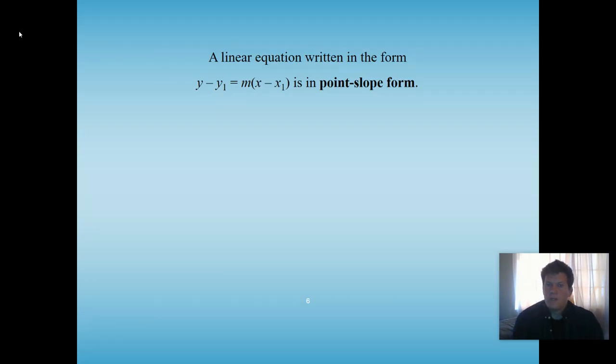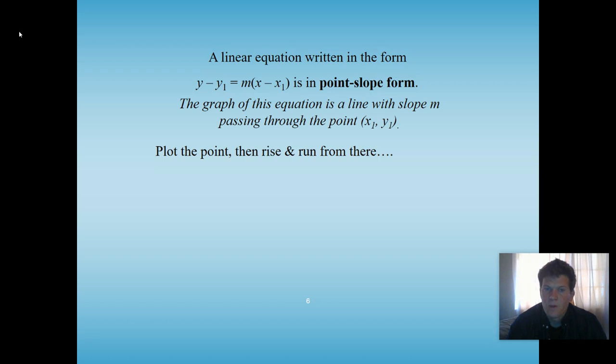A linear equation is written in the form y - y1 = m(x - x1). That's our point-slope form. So the graph of the equation is a line with that slope passing through that point (x1, y1). So let's plot that point and then count the rise and the run.